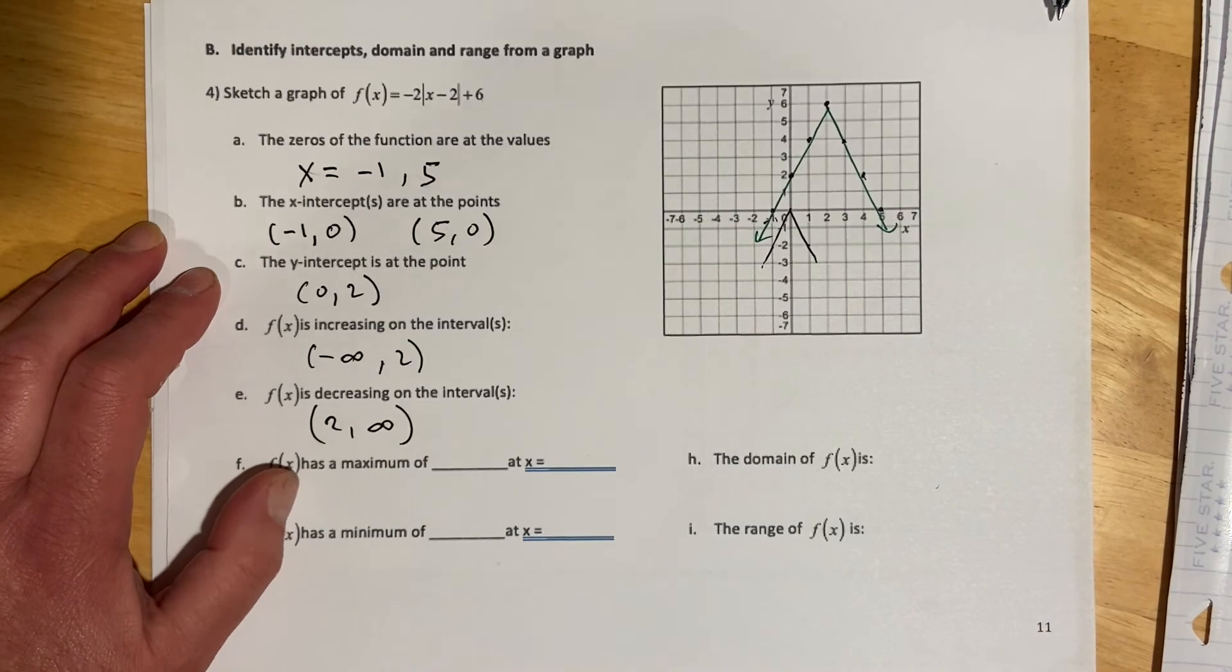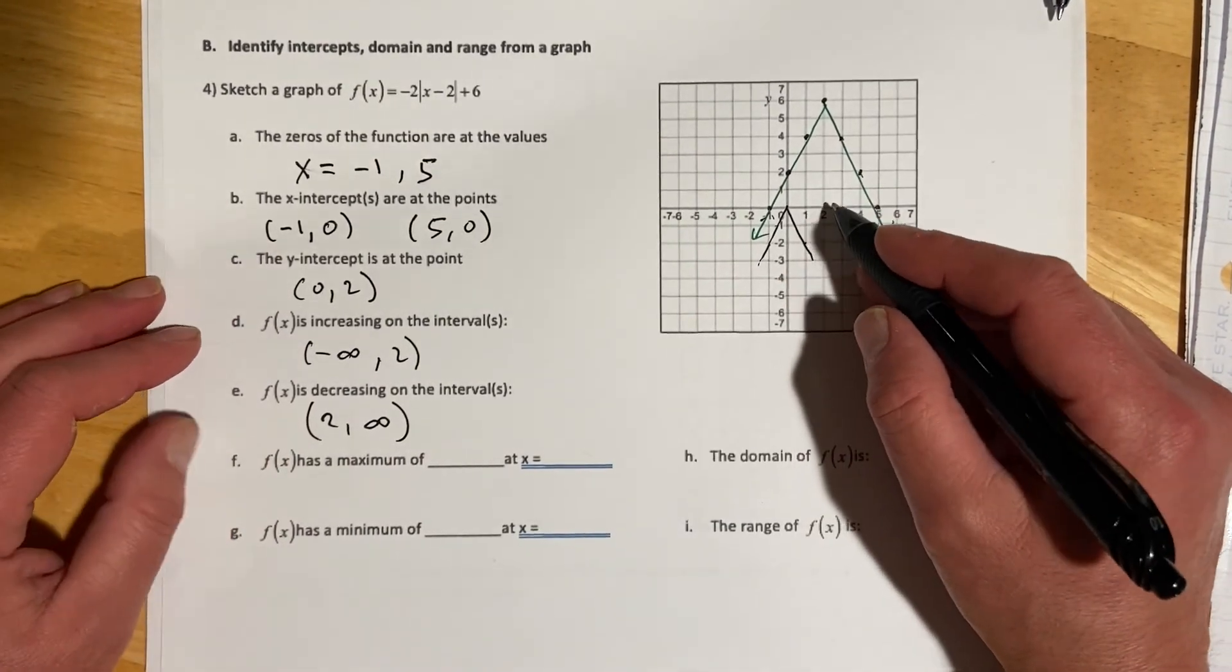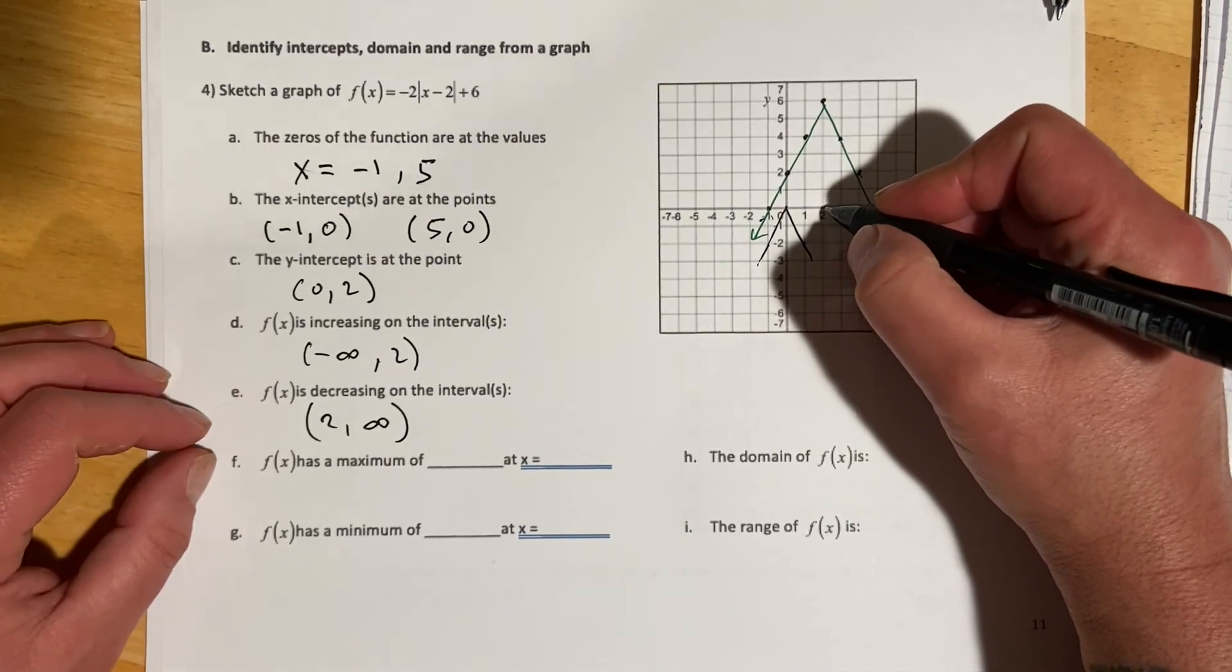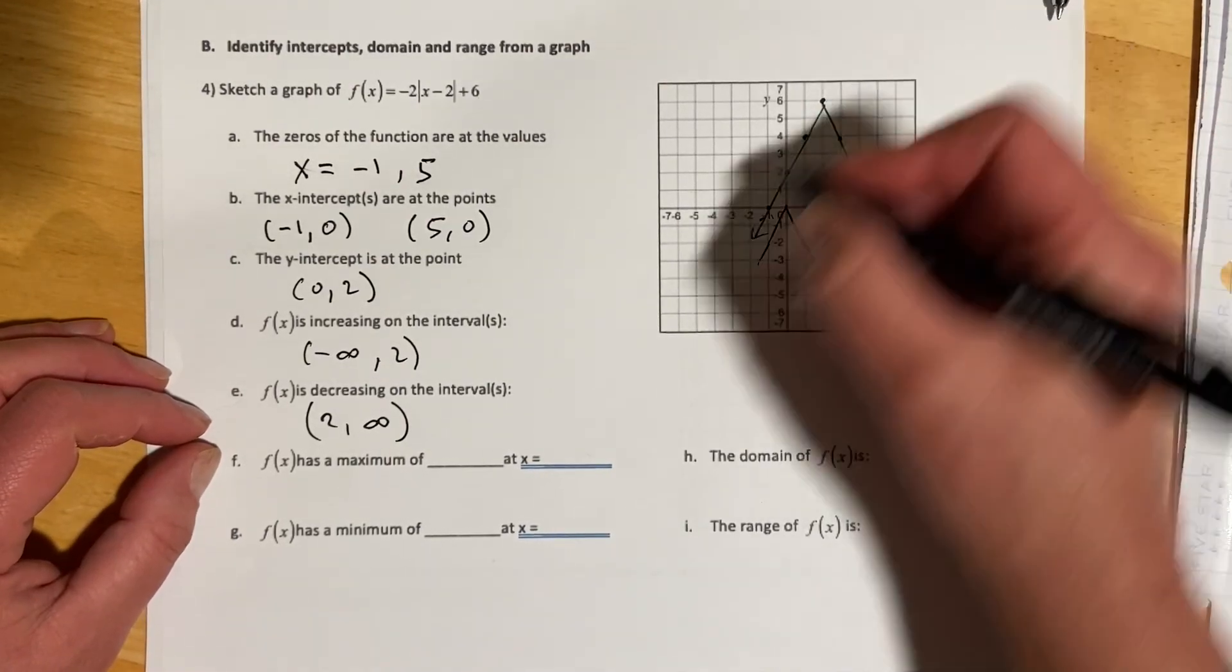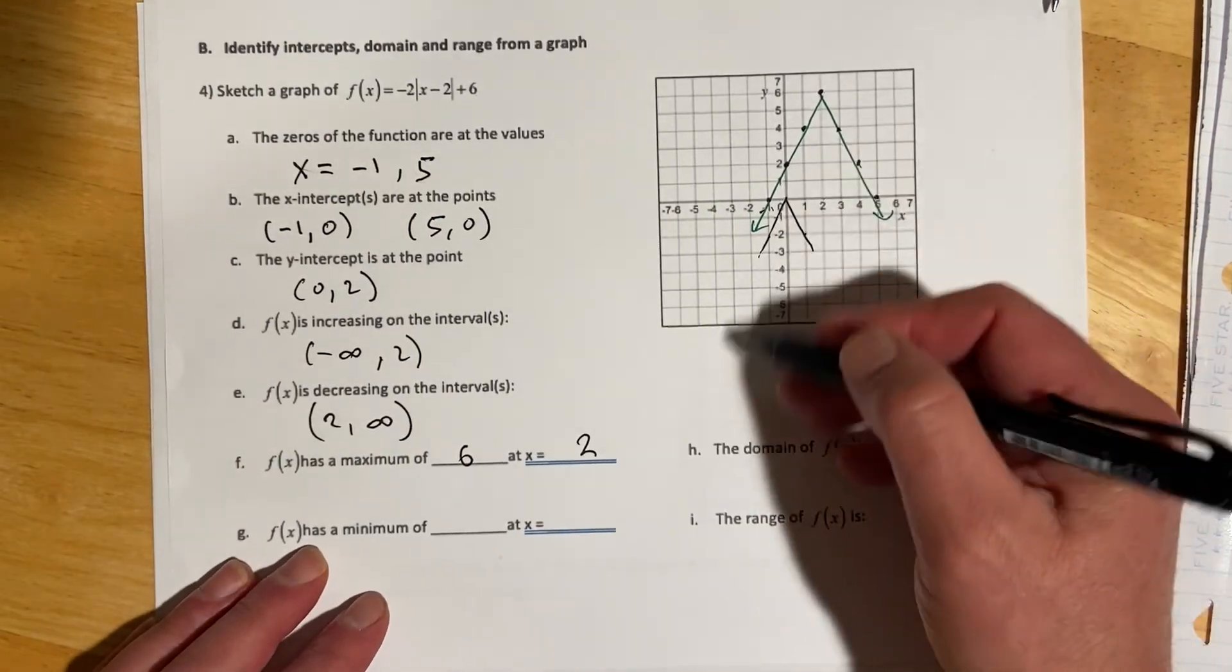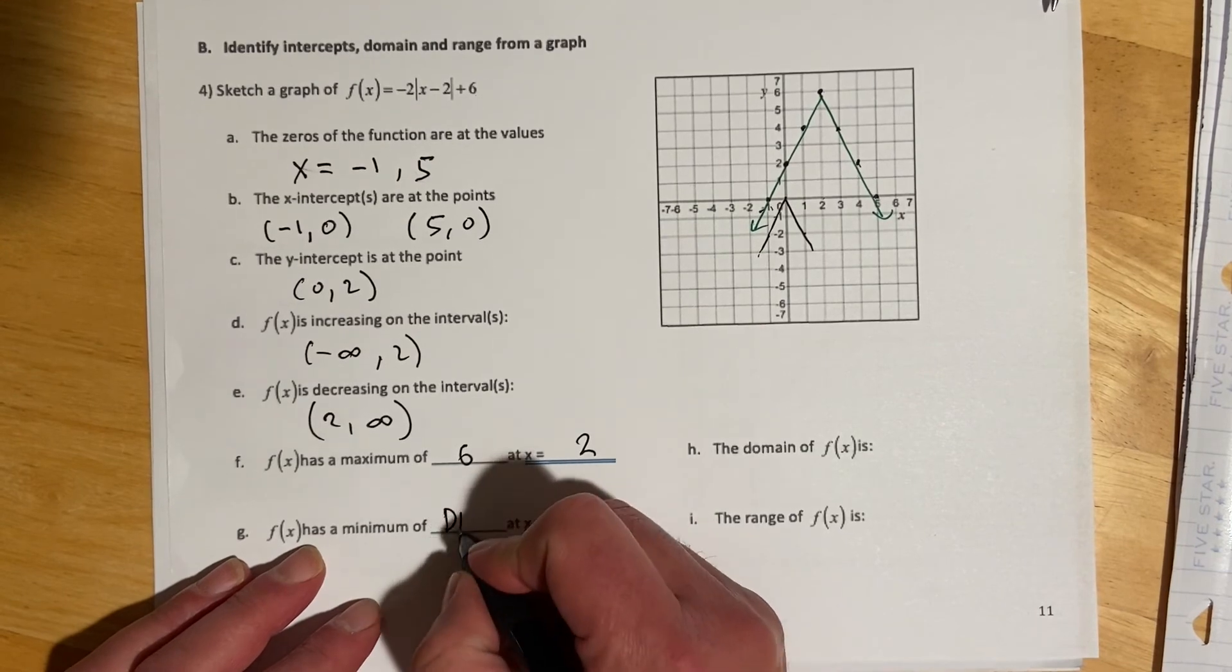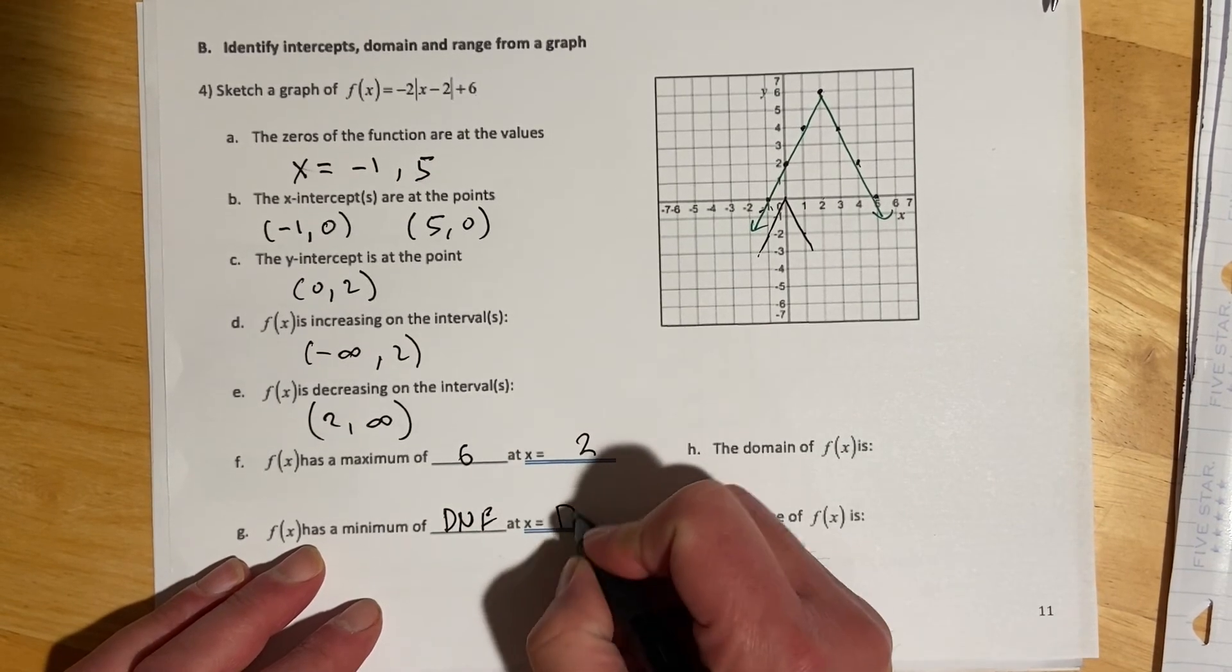f(x) has a maximum value of 6 when x equals 2. For minimum, it doesn't have a local min and just goes to negative infinity, so we would say DNE (does not exist).